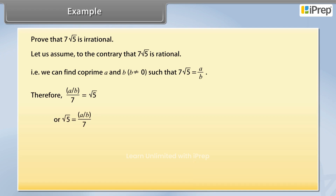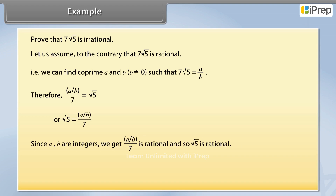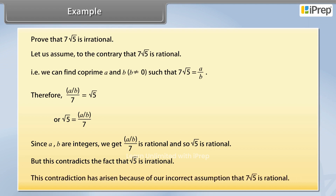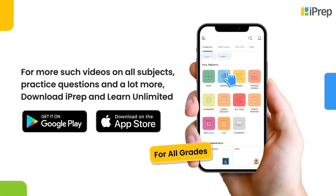Since a and b are integers, we get a upon 7b is rational, and so square root 5 is rational. But this contradicts the fact that square root 5 is irrational. This contradiction has arisen because of our incorrect assumption that 7 square root 5 is rational.